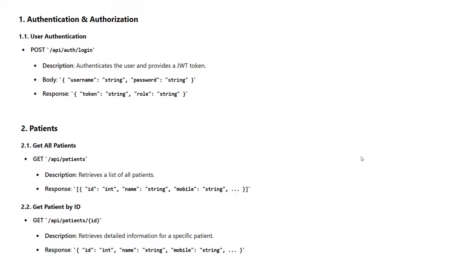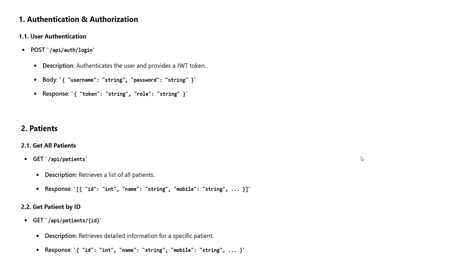Now in this video tutorial, I'm going to tell you about a clinic management system. I'm going to design an API for the clinic management system. First, I want to talk about the endpoints. The first part is authentication and authorization. We have three users: admin, doctor, and helping staff. For user authentication, we have a POST action method for API/auth/login. It authenticates the user and provides a JWT token. The body requires username and password, and the response includes the token and role.